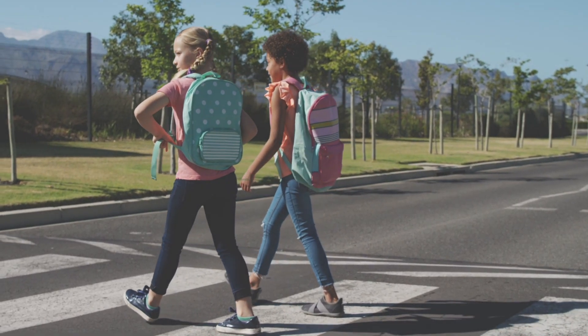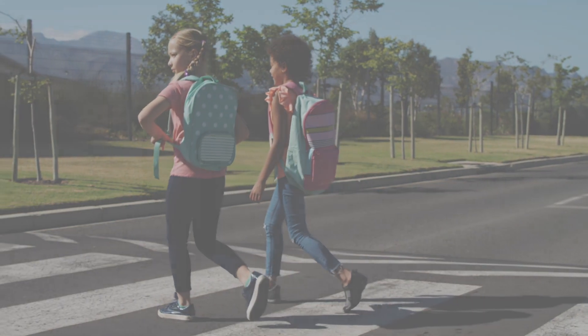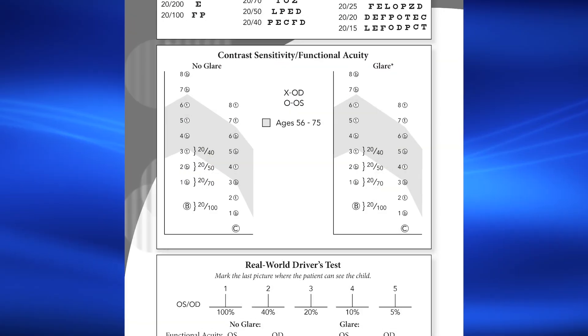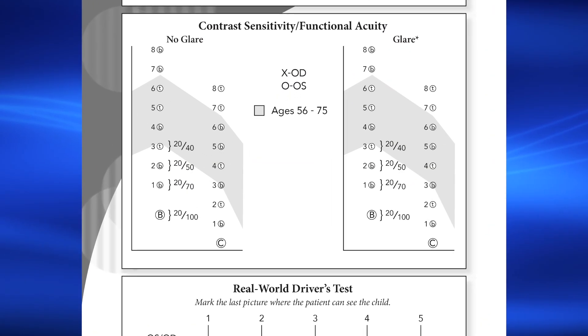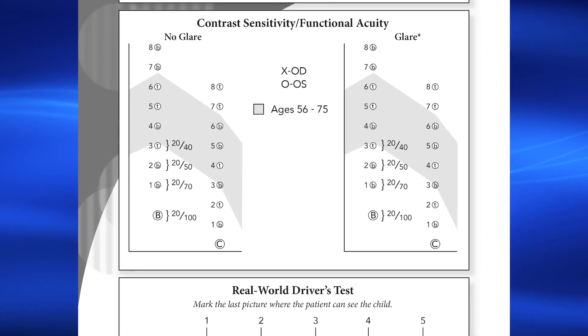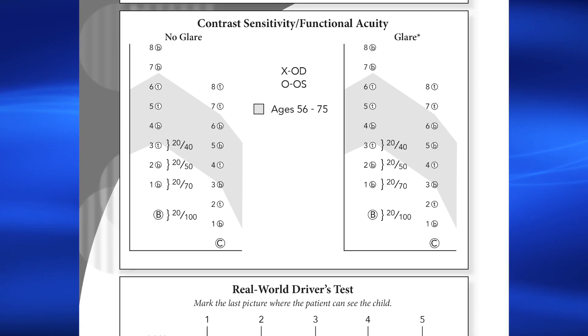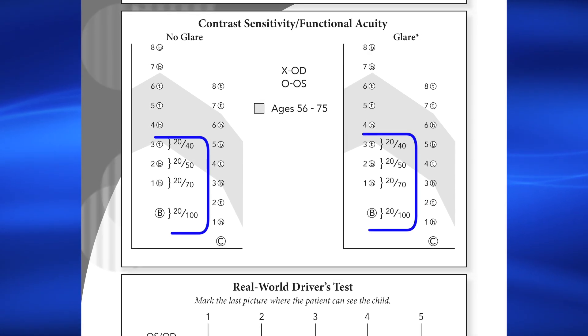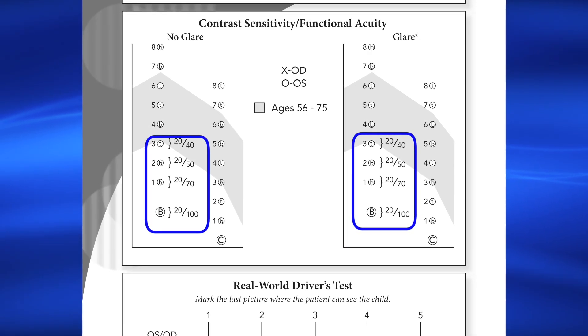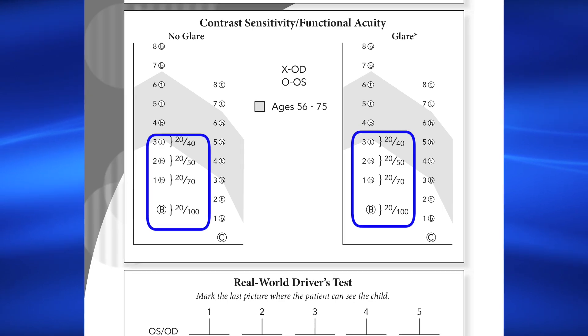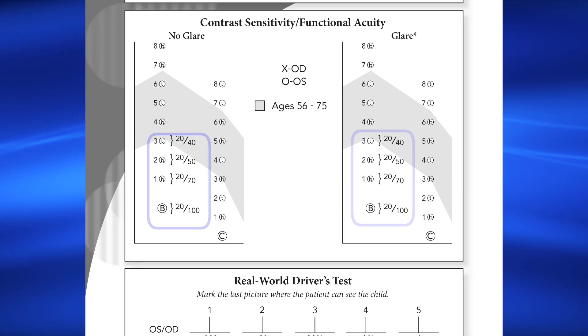The proprietary Vector Vision functional acuity score equates the real-world vision loss to loss of visual acuity. To determine a patient's functional acuity score, simply use the recording form shown here. The recording form shows the different levels of functional acuity associated with each contrast level on Row B.